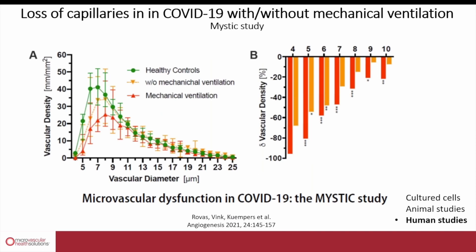Furthermore, in more critical situations — like patients with COVID-19 or patients with sepsis in the ICU — they will lose even more capillaries, up to 95% of their smallest capillaries because of glycocalyx damage. We believe that this significant loss of capillaries significantly contributes to the problems at an organ level in these patients.